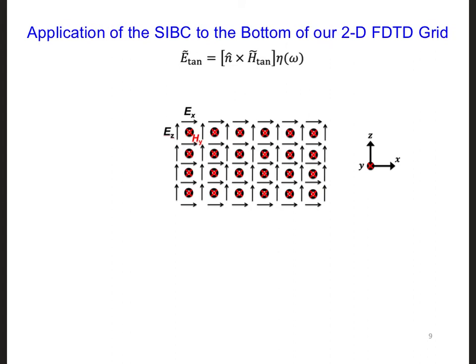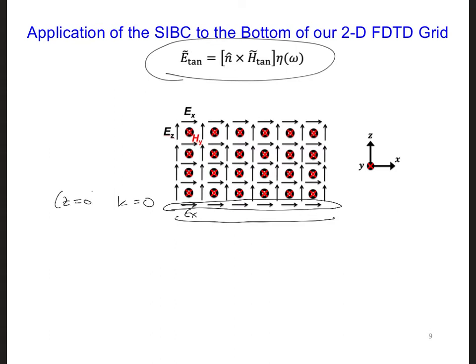Here's a diagram of our grid. We want to apply this surface impedance boundary condition to the bottom of the grid. Luckily, we have an electric field along the bottom of our grid that is parallel to the surface of the ground, EX. So we can use this equation, given here, to approximate the string of EX components along all of the i's at k equals 0. For now, I'm writing 0 for k, because the bottom of the grid corresponds to z equals 0.